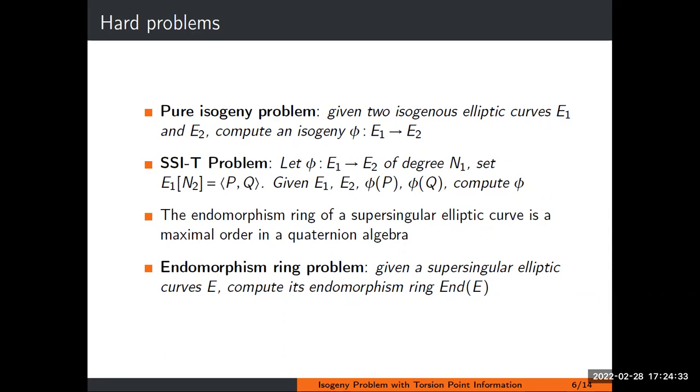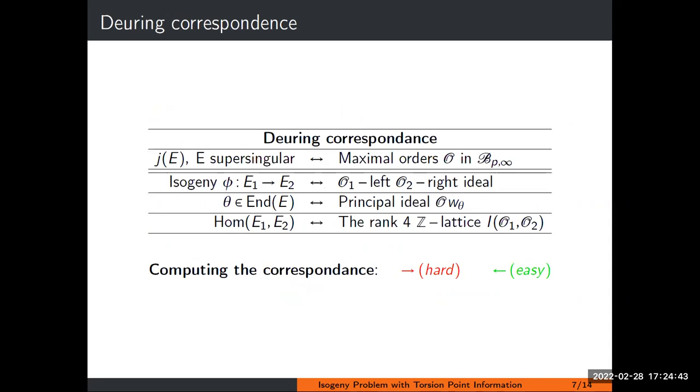This endomorphism ring has a very particular structure. Every supersingular curve has the property that its endomorphism ring is a maximal order in a certain quaternion algebra. This correspondence was first discovered by Deuring back in the 1930s, and it's a really nice correspondence because it's a categorical equivalence. Many of the notions in the elliptic curve setting have their counterparts in the quaternion setting. For example, a supersingular curve defined over Fp squared corresponds to maximal orders in the quaternion algebra ramified at P and infinity.